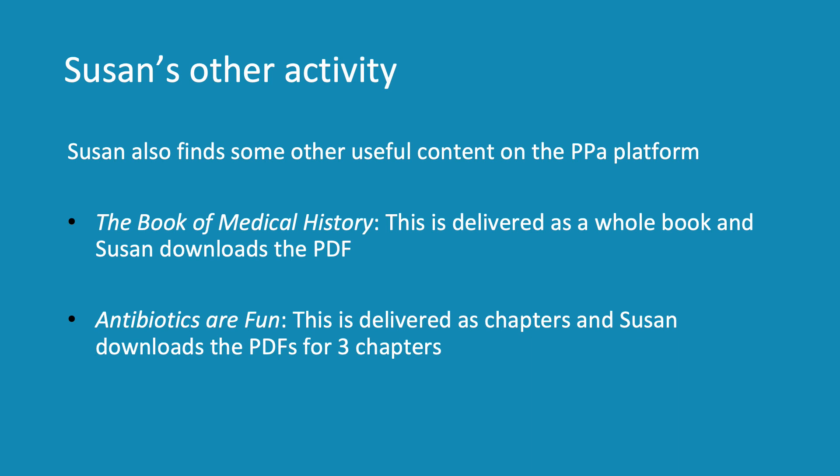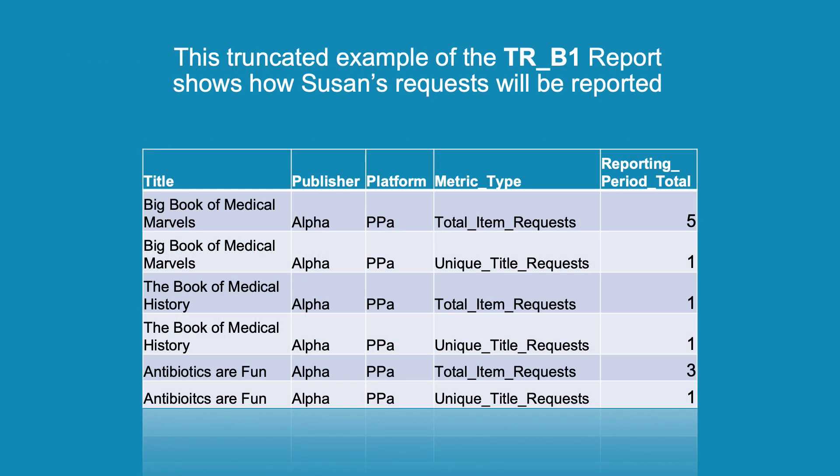In the same session, Susan finds some other useful content on the PPA platform: The Book of Medical History, which is delivered as a whole book, and Susan downloads the PDF; and Antibiotics of Fun, which is delivered as chapters, and Susan downloads the PDFs for three chapters. This is a truncated example of the TR B1 report that Susan's librarian will receive. The Big Book of Medical Marvels shows Total Item Requests as five – one for each chapter PDF downloaded – and Unique Title Requests again has a count of one because all five chapters came from this title.